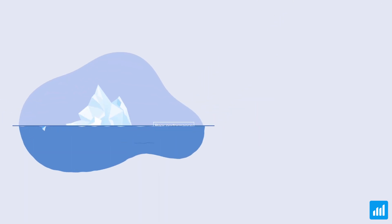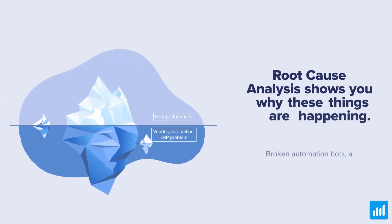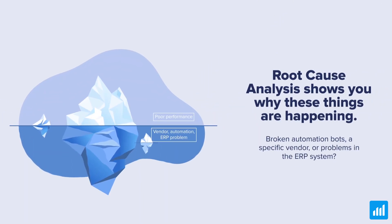The root cause analysis shows you why these things are happening. Is it because of broken automation bots, a specific vendor, or problems with the ERP system?